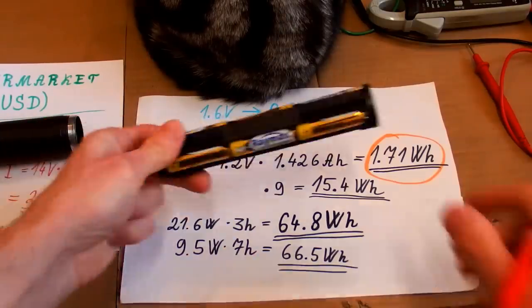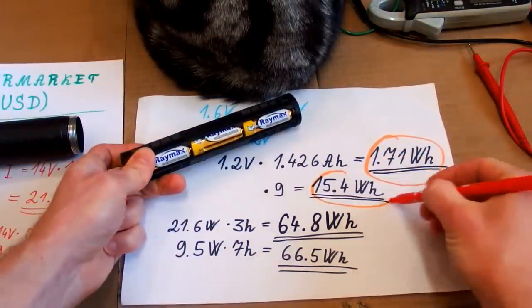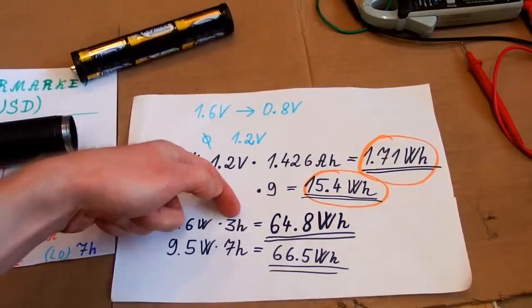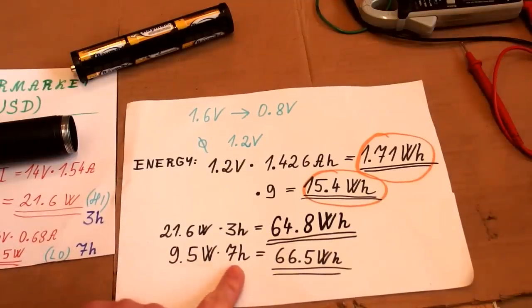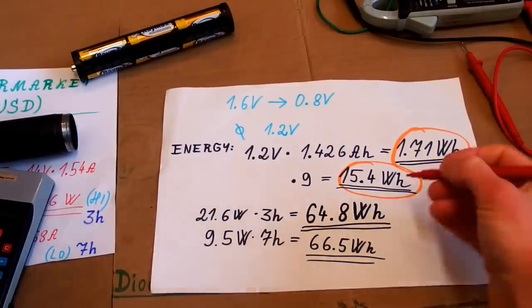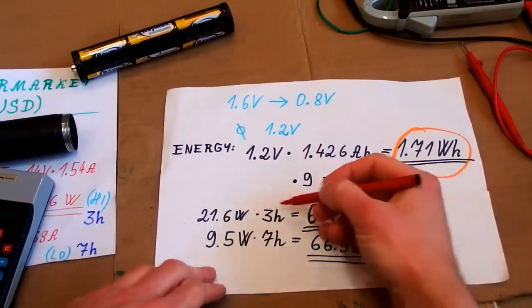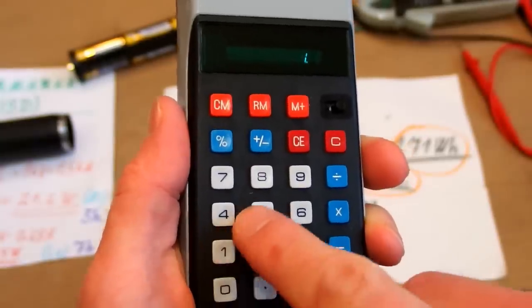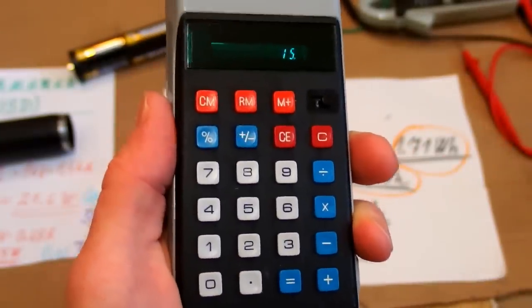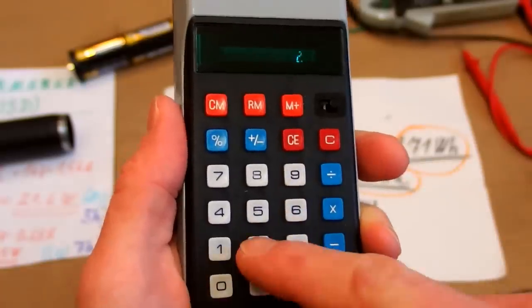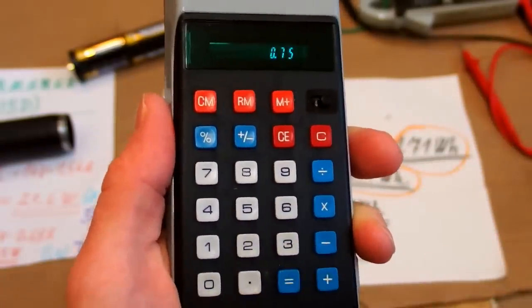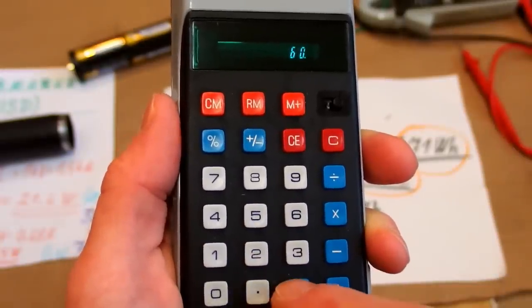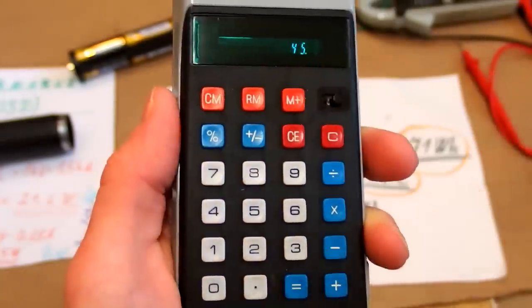So as you can see the energy in this package of batteries is barely one quarter of the energy required to run it at 21 watts for 3 hours or 9.5 watts for 7 hours. So as you can see there is not enough energy in those batteries and those numbers just don't add up. So if the battery package has 15 watt hours of energy in it and it has to give 20 watts of power divided by 20 watts, it's going to run for about 0.75 hours. Times 60. Now it's in minutes. 45 minutes at full power.